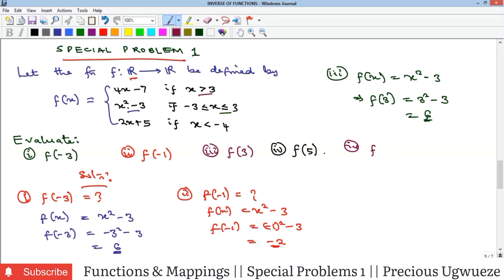The f of x we will use here will be the first sub-function, which is 4x minus 7. Our f of 5 will be substituting x as 5: we will have 4 times 5 minus 7.